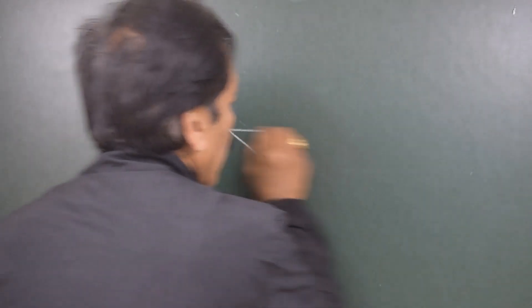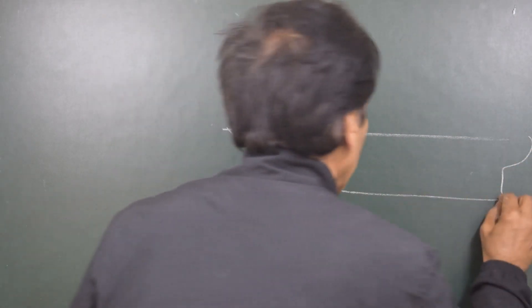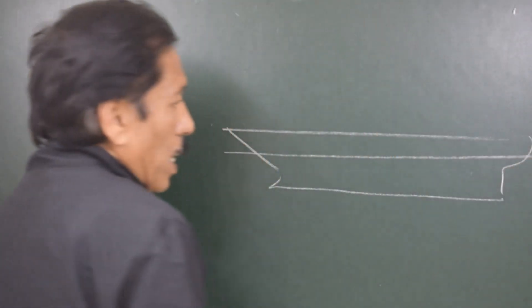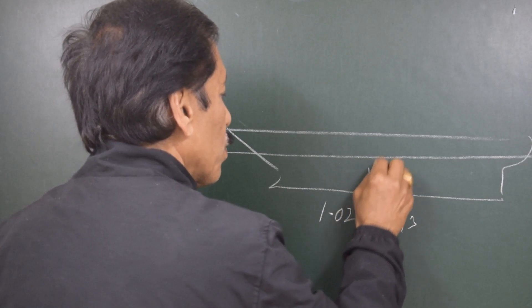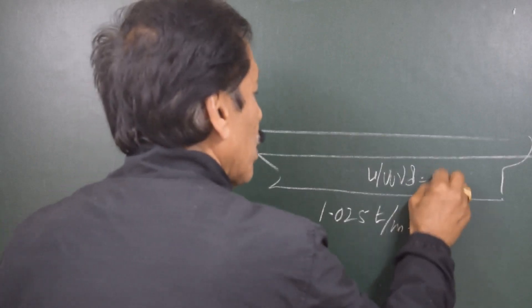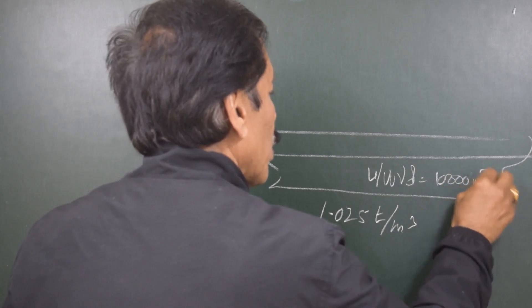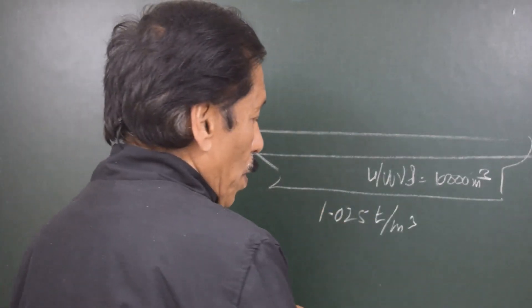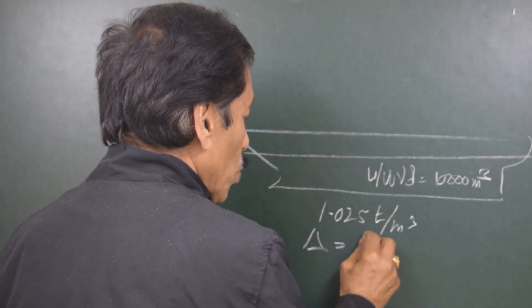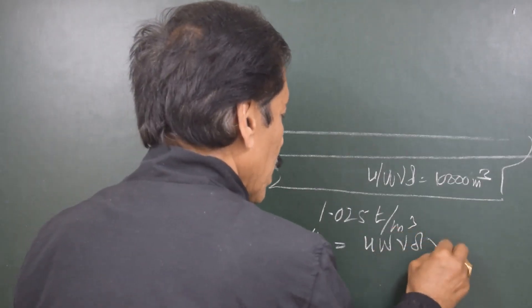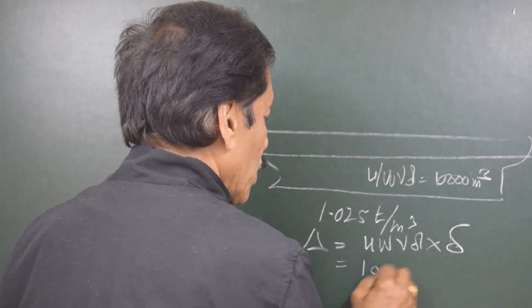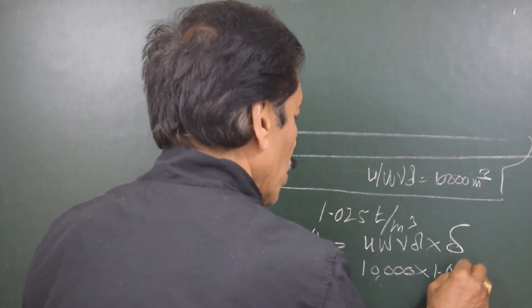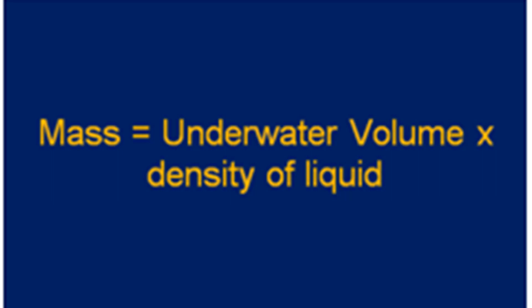Now let us understand what happens in case of a ship-shape vessel. This vessel floats in water of density say 1.025 tons per meter cube, and the underwater volume is suppose 10,000 meter cube. Then the mass of the ship — or displacement — is equal to underwater volume into density of the liquid, which means 10,000 × 1.025 tons. So this is the displacement of the vessel.